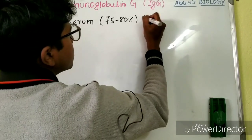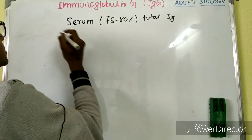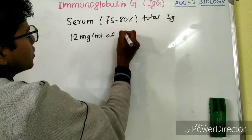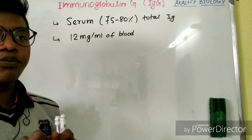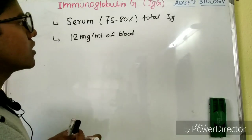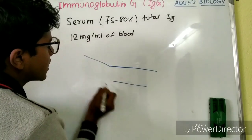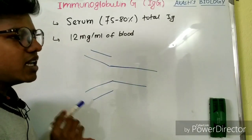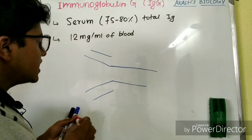The concentration of IgG in the blood is 12 mg per ml of blood. Coming on to the structure of immunoglobulin G — likewise the general structure of immunoglobulin dealt earlier, it is the same inverted Y-shape. This is the heavy chain and these are the light chains. Any immunoglobulin is made up of two heavy chains and two light chains.